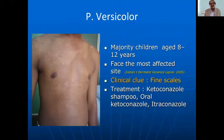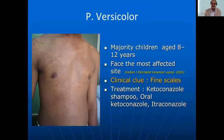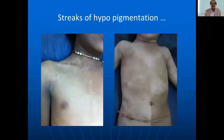Pityriasis versicolor is very commonly seen as hypopigmented patches in young adults, especially between 8 to 12 years. The face is the most common site. The clinical clue is very fine scales — if you manipulate the skin you get fine scales. It is a superficial fungal infection, and treatment is ketoconazole shampoo or oral ketoconazole or itraconazole.